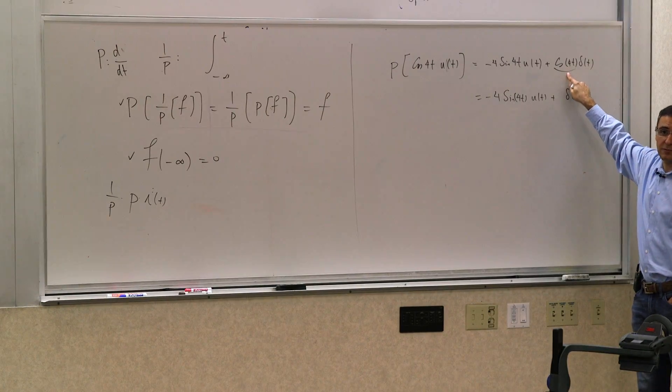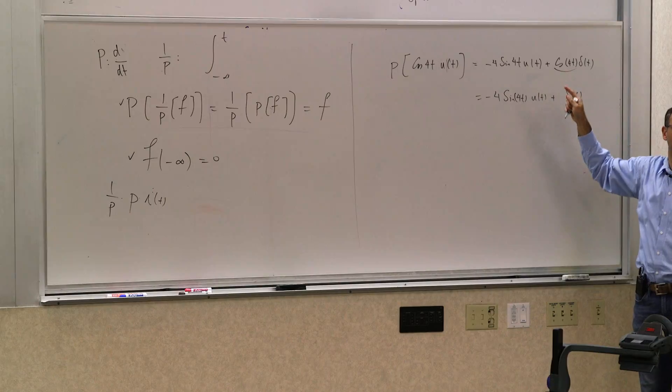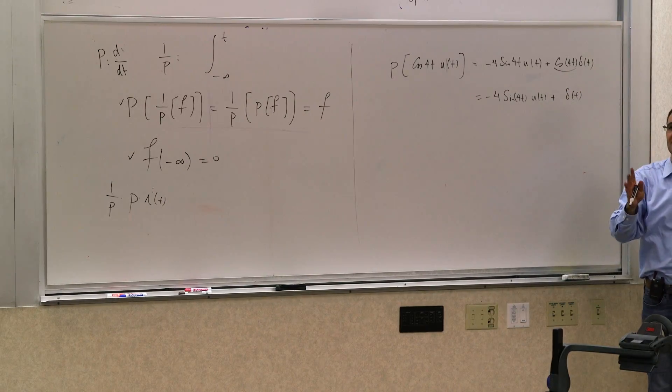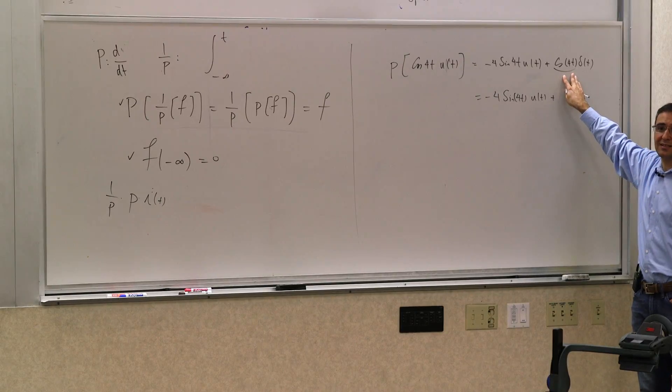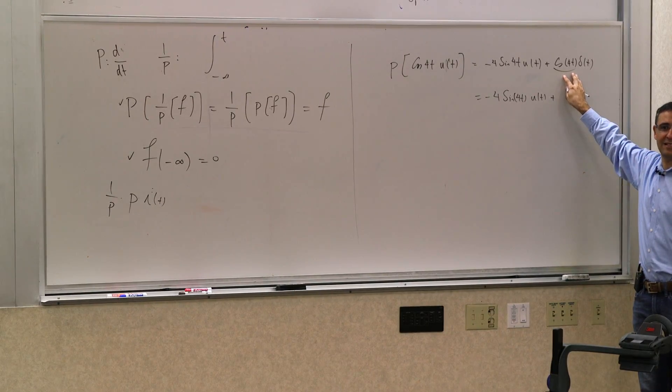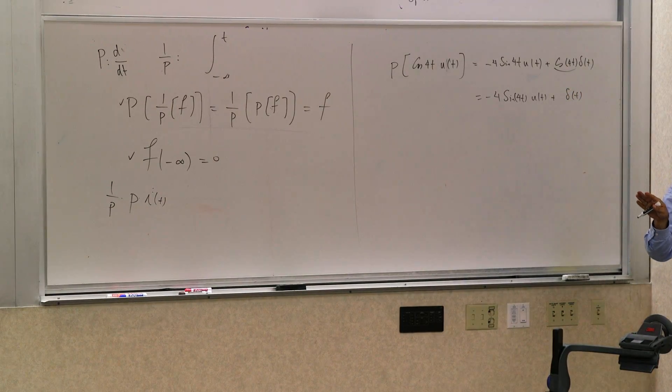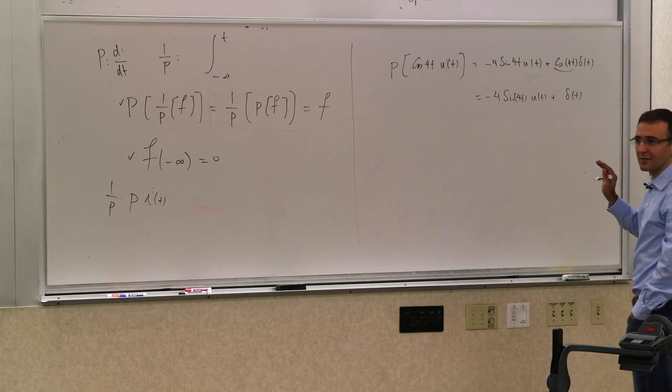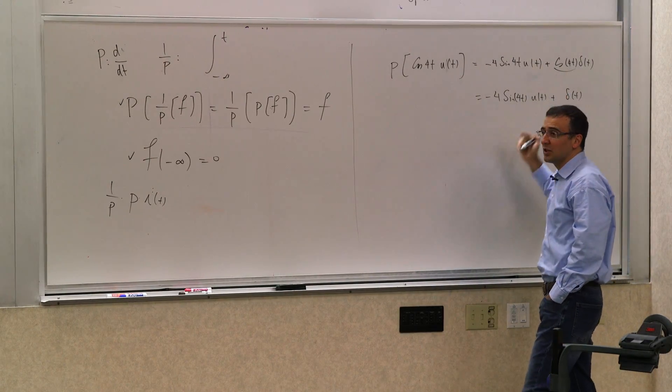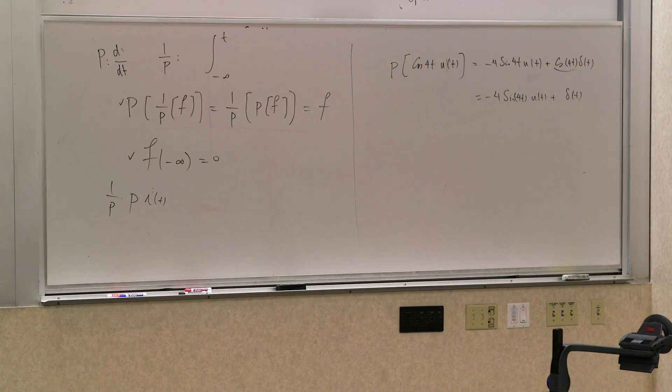Do I care about the value of this function at any other time other than t equals zero? No. So what is this value at t equals zero? One. So this is identically equal to negative 4 sine of 4t u(t) plus delta of t. You should get comfortable with this operation. When you have a delta, you can get rid of most of the things that happen in front of it. It simplifies things a lot.